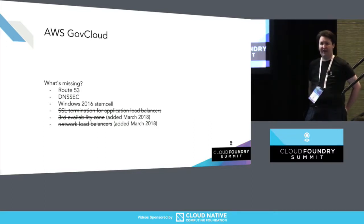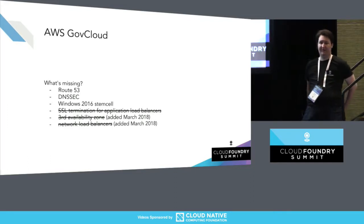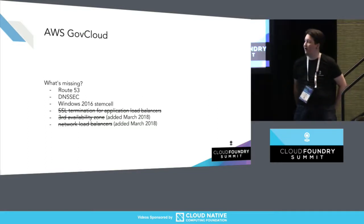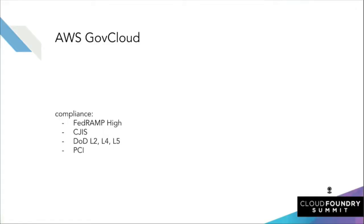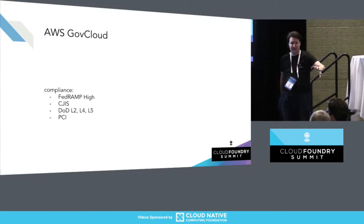There are many features AWS GovCloud added recently — including a third availability zone, which makes deploying Cloud Foundry much easier — as well as SSL termination on application load balancers and network load balancers. All of that is now available in the AWS GovCloud region, which brings it much closer to feature parity for Cloud Foundry users toward what vanilla AWS regions already have. AWS GovCloud has several compliance features, including FedRAMP high and DoD up to level five.